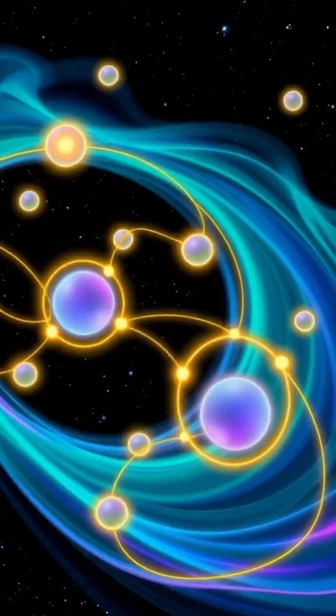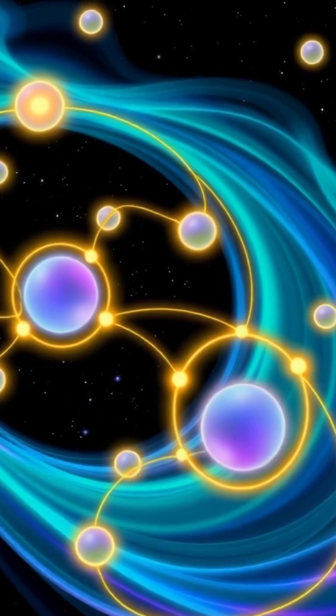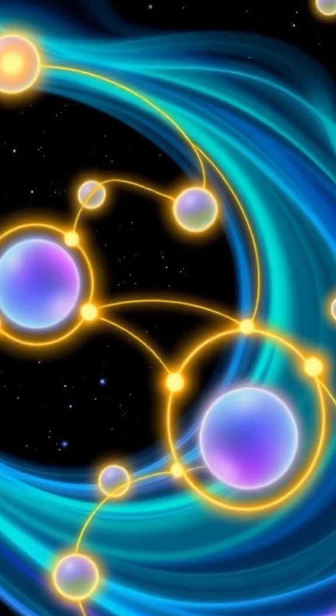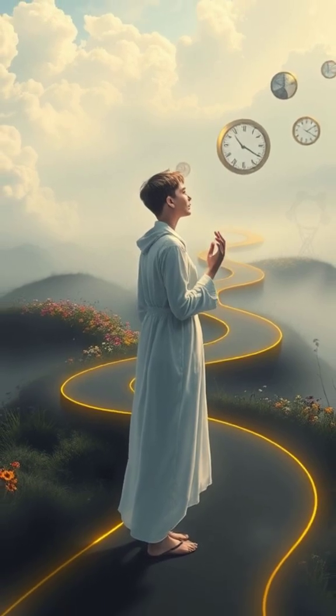This isn't just light. Matter does this too. Picture this. Electrons, the particles swirling inside atoms, can form wave patterns the same way light does. It's like reality itself blurs the lines between options until we look.